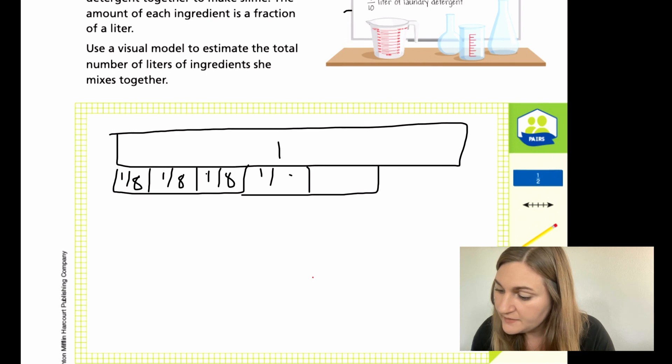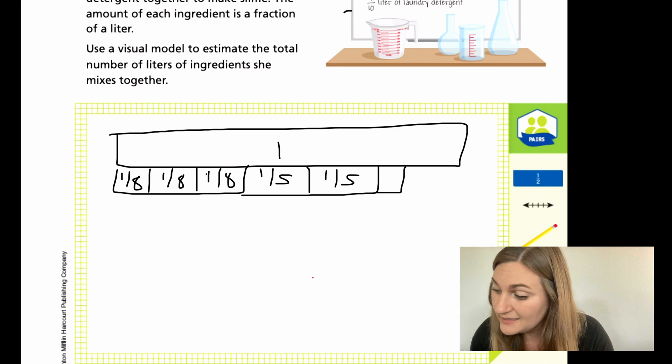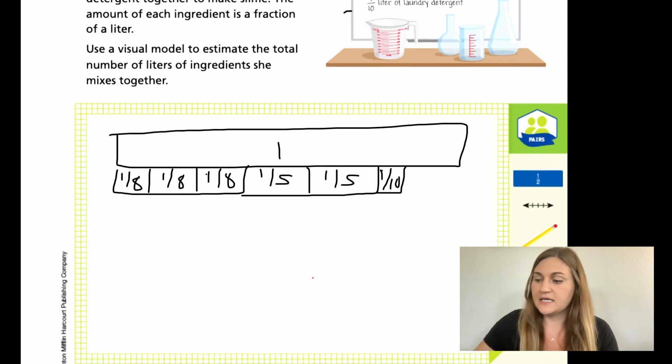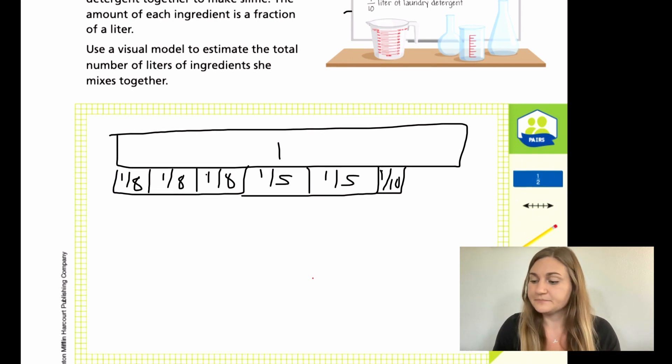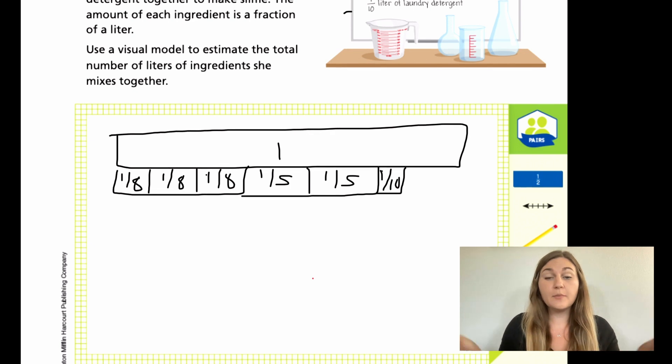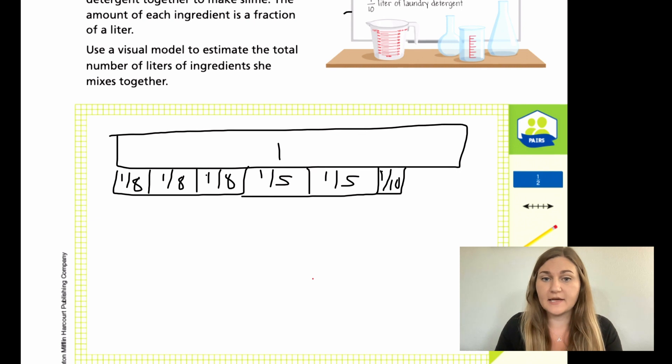So I can do my 1/5 here and my 1/5 here, and I know that my 1/10 is pretty small. It's not going to be perfect. I'm just estimating to show what the different pieces of the fraction are going to be. This is what it would look like using a visual model, showing that if I put all the pieces together, my estimate is about 1 liter if I add them all together.